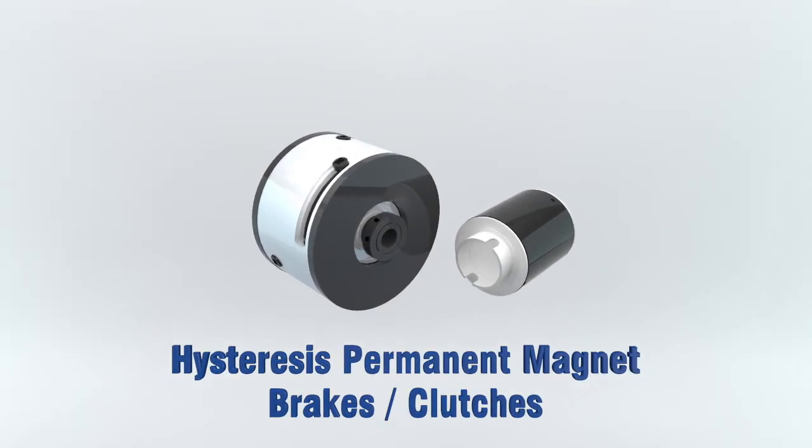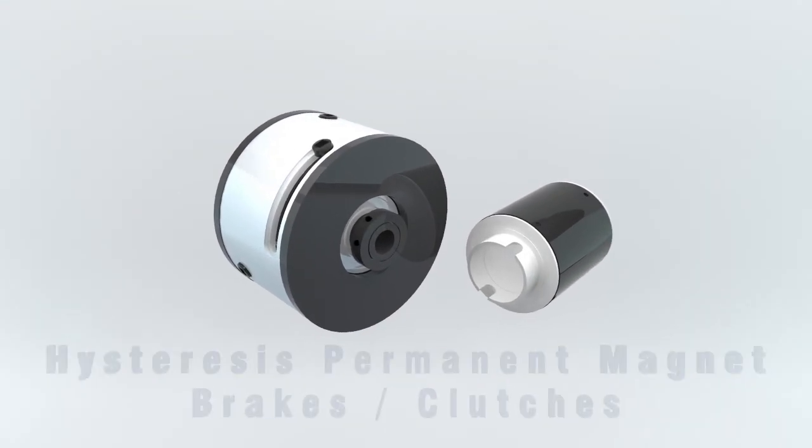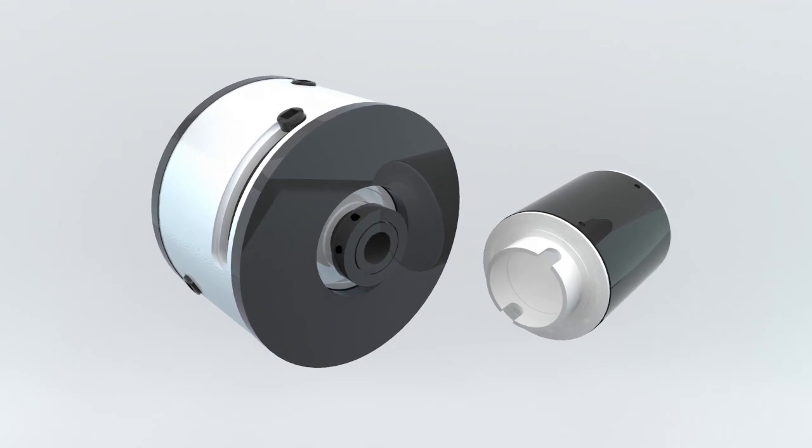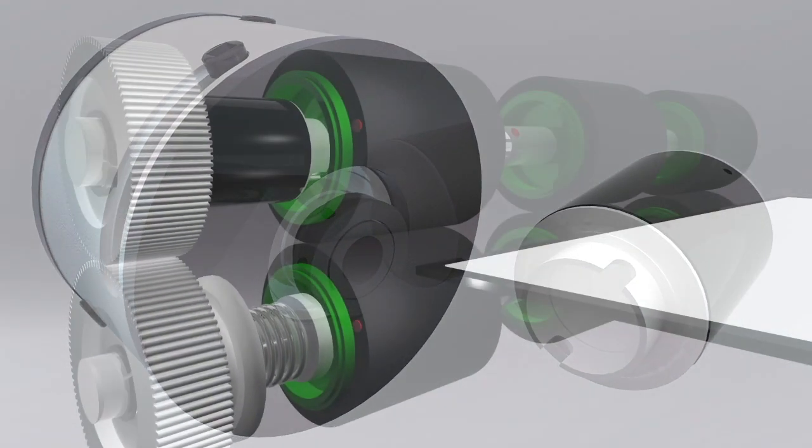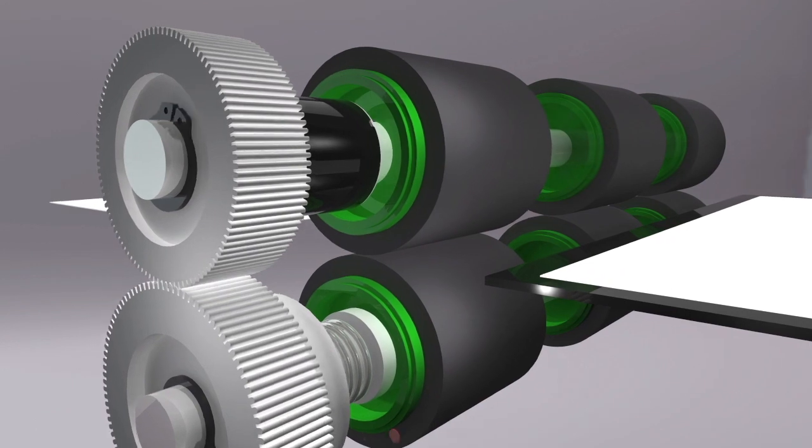Hysteresis permanent magnet brakes and clutches. Permanent magnet hysteresis units can be used as a torque limiting clutch or a drag brake, depending on how they are installed.